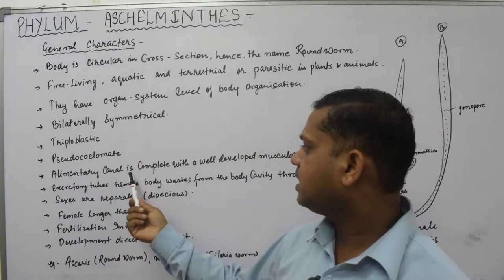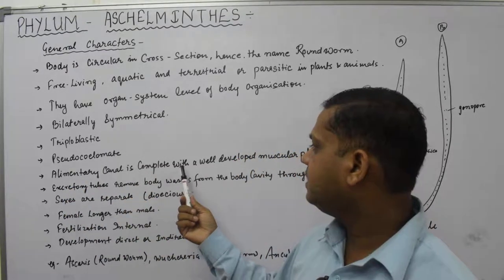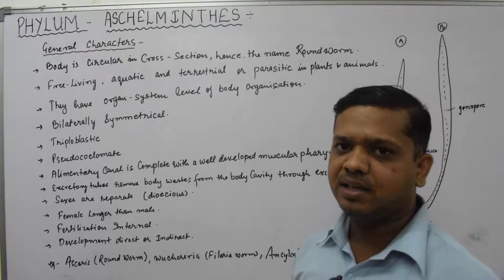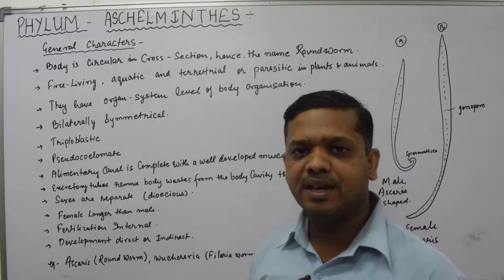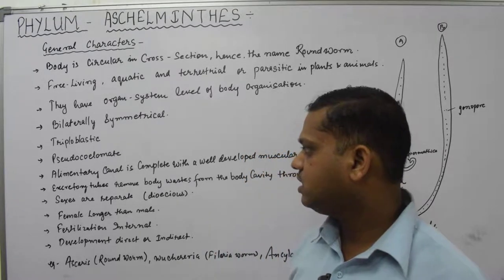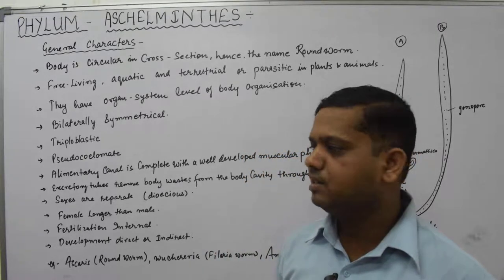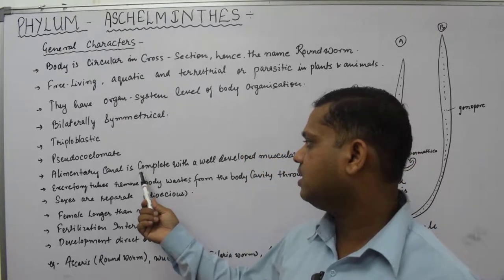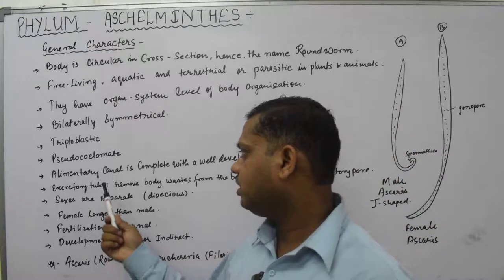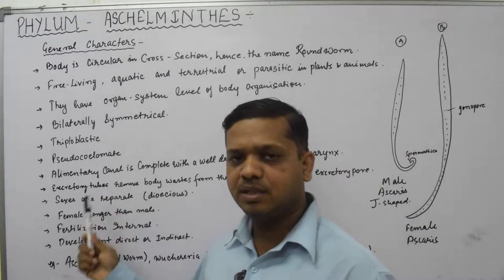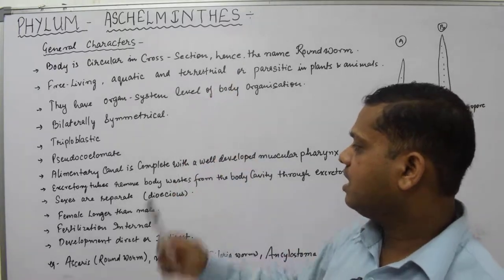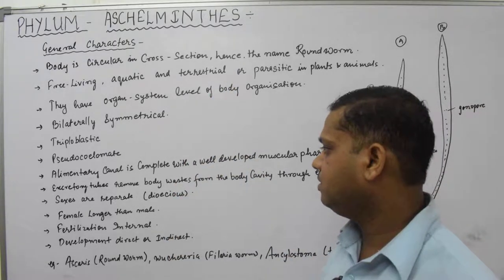The alimentary canal is complete, with a well-developed muscular pharynx. The muscular pharynx is present in this animal for eating food material, and the alimentary canal is completely well developed. That is an important feature found in phylum Aschelminthes.